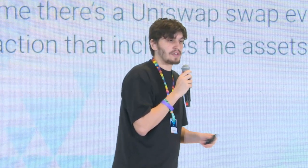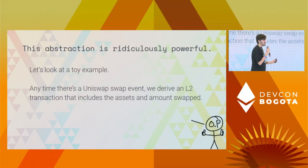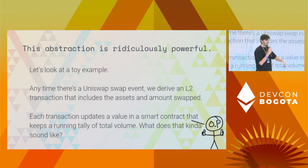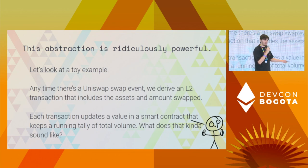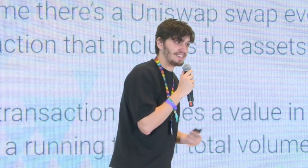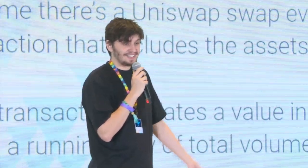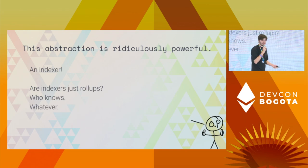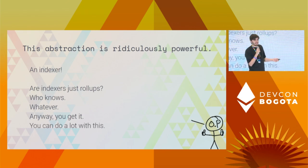The point is that we can transform all these different data sources into payloads that get executed on layer two. This abstraction is really, really powerful. If you want to build a rollup, you read sequencer transactions, deposit data, and block data — but that's not the only thing you can do. You can derive data from almost any piece of information on Ethereum or your data availability layer. For example: a layer two without user transactions where the only derived payloads come from Uniswap swap events on layer one — feeding those into a smart contract that keeps a running tally of volumes. That looks like a verifiable indexer. Indexers are kind of just rollups.